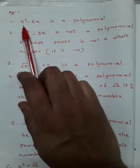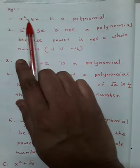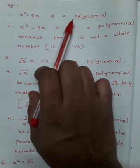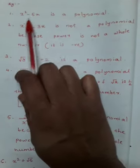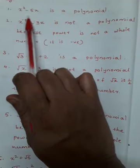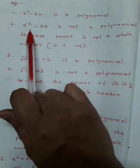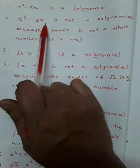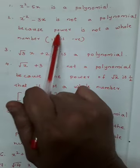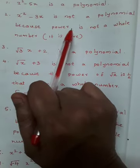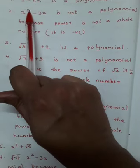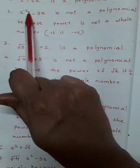Now we can see some examples. First, x² - 5x: it is a polynomial because it satisfies both conditions. Next, x⁻² - 3x: it is not a polynomial. Why? Its power is not a whole number — the power of x is -2, which is a negative number.